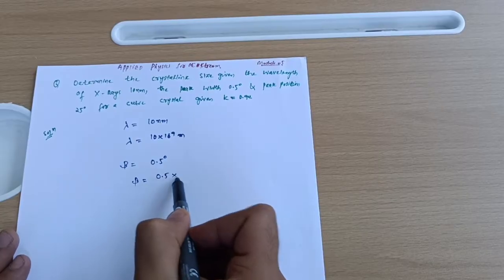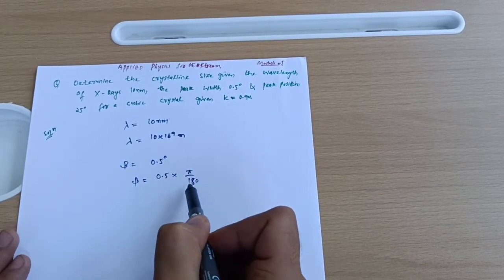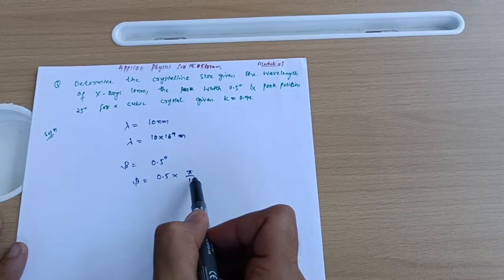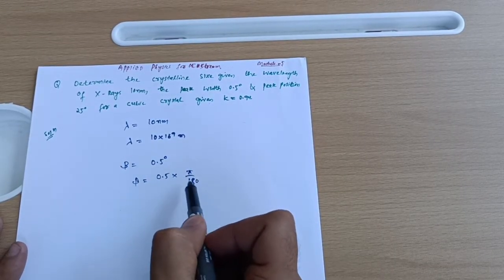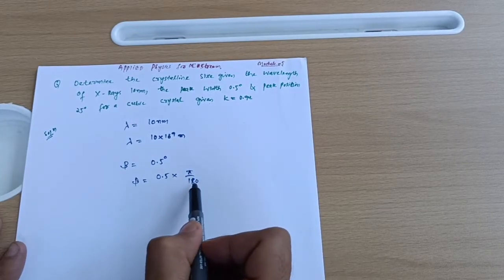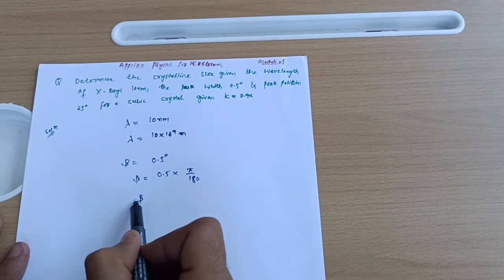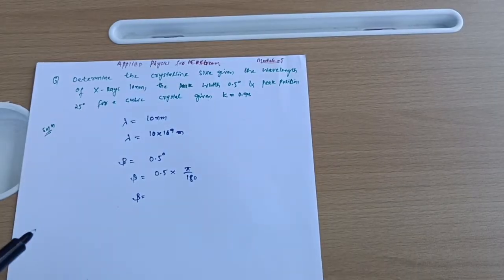To convert to radians, we write β = 0.5 × π/180. This is changing degrees into radians. If you have to change radians into degrees, then multiply by 180/π. When you calculate, you get the value accordingly.